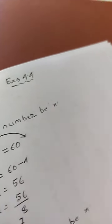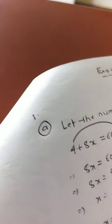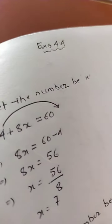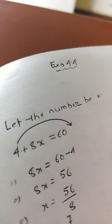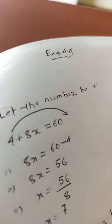Hello students. In this session I will explain question number one and two of exercise 4.4. Let's begin with question number one. In question number one we have seven sums. For each sum you have to set up an equation and then solve for the unknown number.